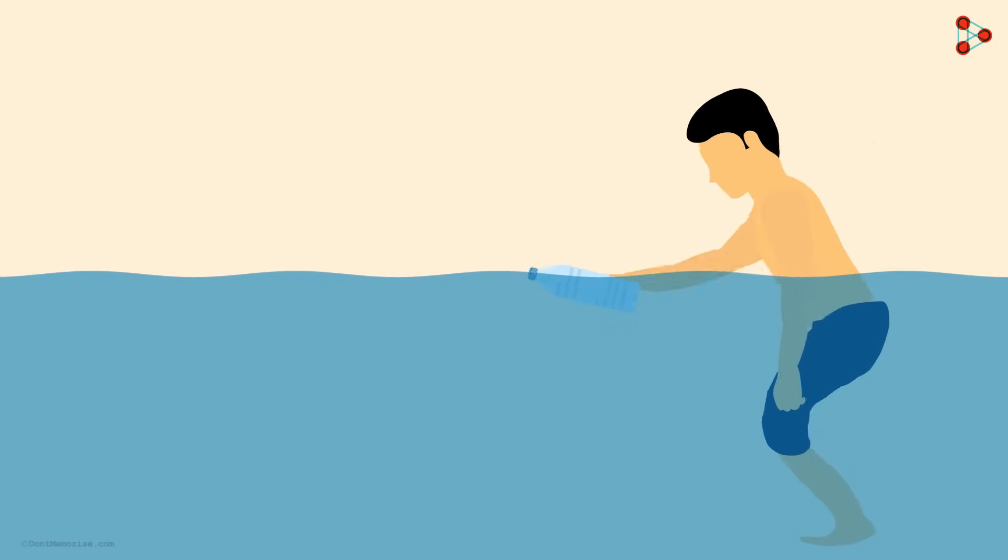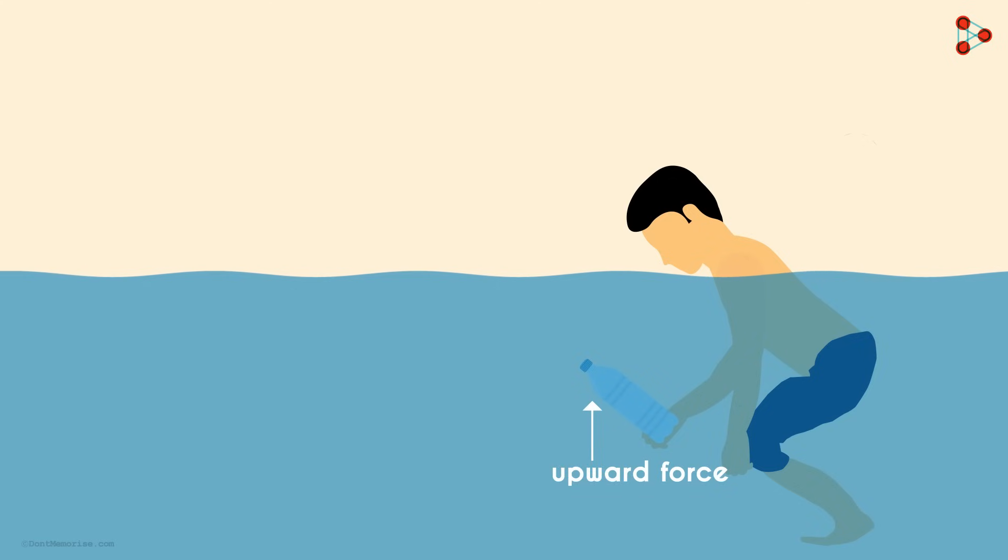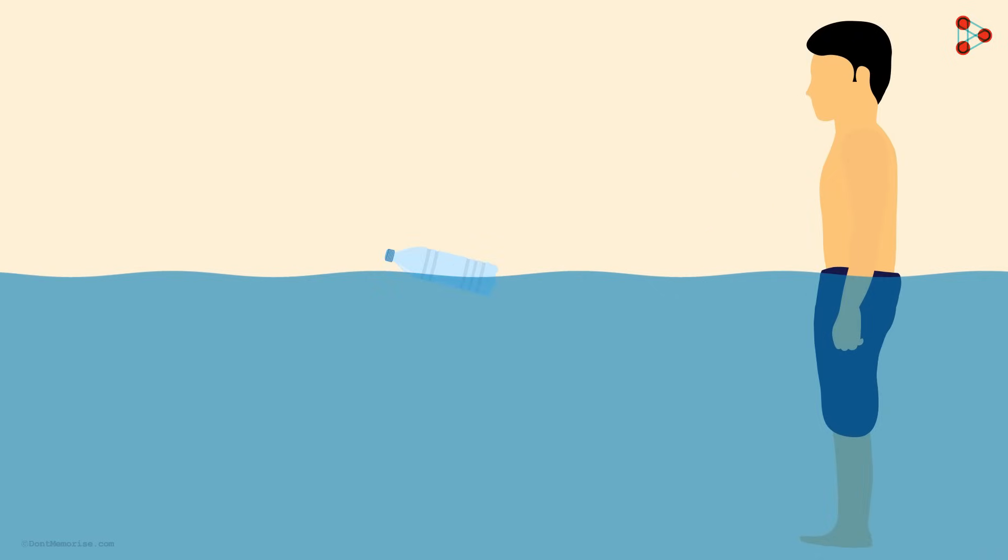Now push the bottle deeper inside the fluid. You will feel more force against your hand. And when you release the bottle, it will rush back to the surface. It will come up faster than it came up in the previous case. The upward force increases as it's pushed deeper into the fluid, and that's because the pressure also increases as we go deeper into the fluid.